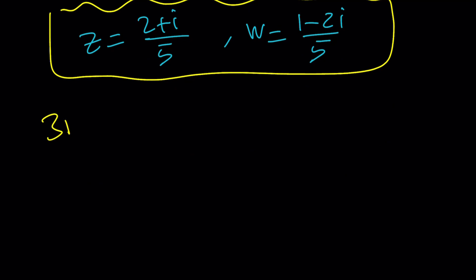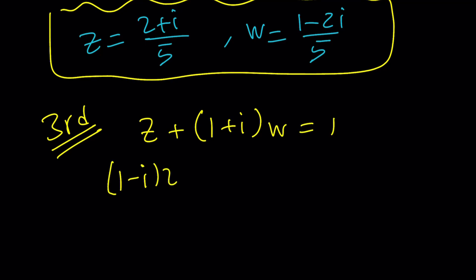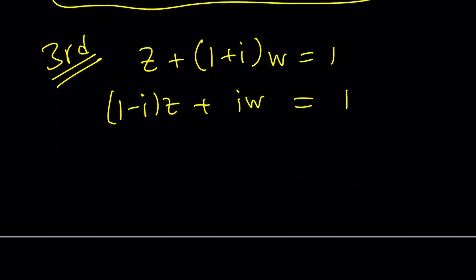Let's look at the third method. The first method was replacing Z with A plus BI and W with C plus DI — a bit painful. For the third method, let me rewrite the equations: Z plus 1 plus I times W equals 1, and 1 minus I times Z plus IW equals 1. I'm going to use elimination. Elimination is a really cool method, especially when the coefficients are nice. In this case they're not very nice, but that's okay. Getting rid of W would be harder, so I'll eliminate Z — it has a coefficient of 1 in the first equation. I'll multiply the first equation by the opposite of 1 minus I, which is I minus 1.